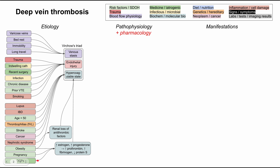Obesity, pregnancy, and oral contraceptive pills are also hypercoagulable risk factors because they increase estrogen, or estrogen and progesterone. Adipose tissue in obesity produces estrogen, and progesterone is present in pregnancy and some oral contraceptive pills. Estrogen and progesterone increase prothrombin, increase fibrinogen, and decrease the anticoagulant protein S.